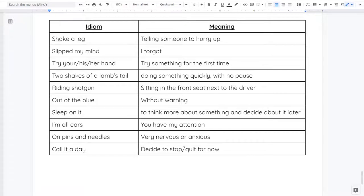If you have ever tried to get into a car with an older sibling and they call shotgun, that means you're sitting in the front seat next to the driver. If something happens out of the blue, that means it happens without warning. If I ask you something and you say let me sleep on it, it means you want to take some time to think more about it and then make a decision about it later. The phrase I'm all ears means that you have my attention. If you come up to me and say I have a story I need to tell you and I tell you go ahead, I'm all ears, that doesn't mean I'm covered in ears. It just means that you have my full attention. If you are trying something and you're worried and you say I'm on pins and needles, that means I'm really nervous or really anxious about something. And our last example is if you decide to call it a day, you're working on a project and you say I'm going to call it a day, that means you're deciding to quit or stop for now and finish later.